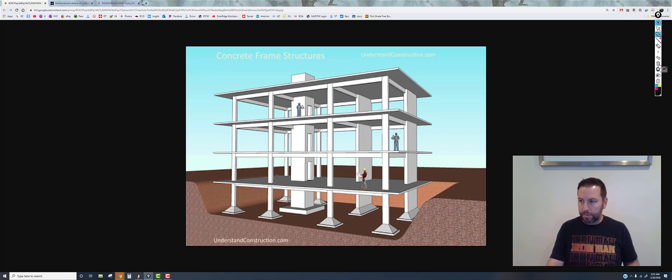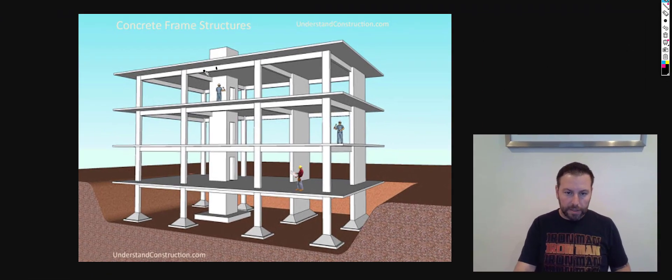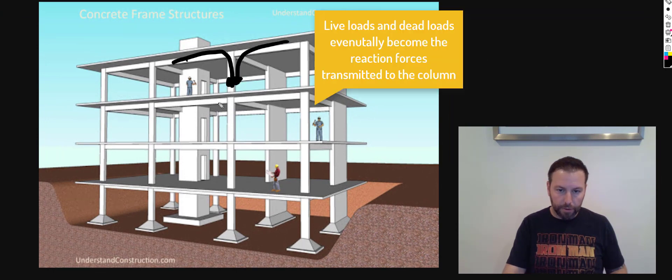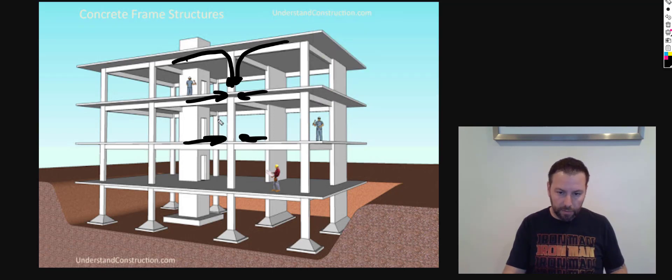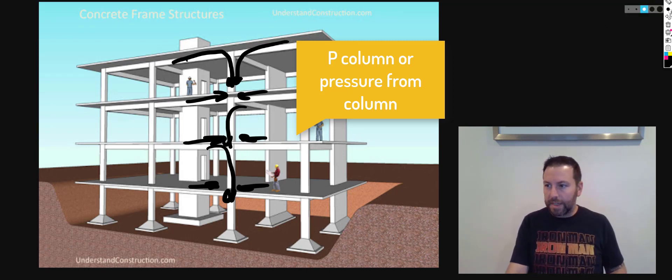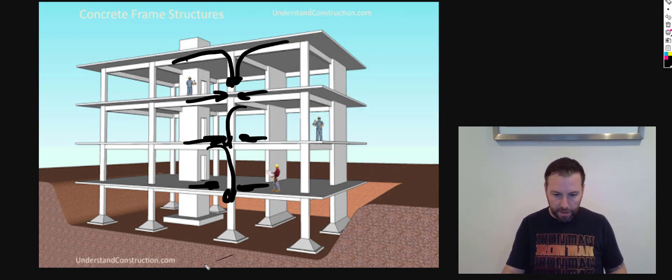So if we just bring up the pen here, this building has a number of loads. If we look at anything from the roof coming down through all the, in this case second floor framing, and moving down through. So we have the roof, third, second, first floor framing all coming down through that column itself.